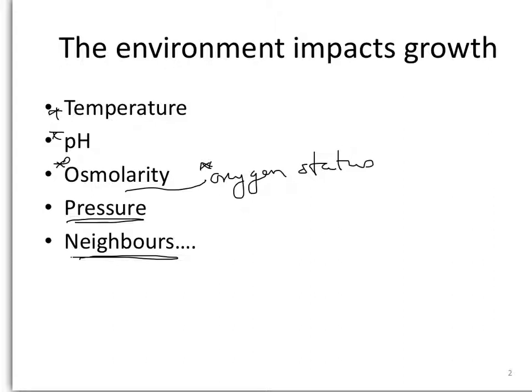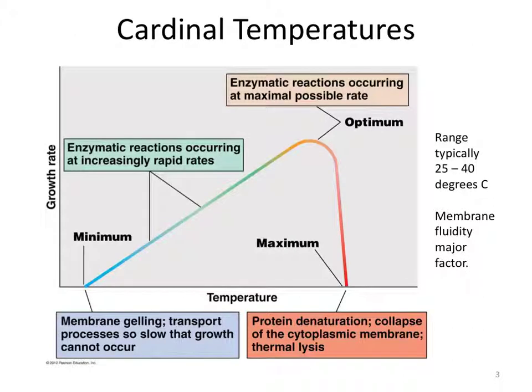Let's think first about temperature. Temperature has profound impacts on organisms, including microorganisms. As temperature rises, chemical reactions, including those catalyzed by enzymes, happen at more rapid rates. This makes growth rates increase as well.